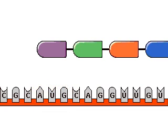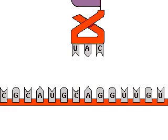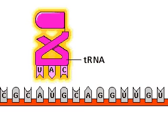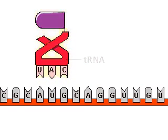In addition to mRNA, several other components are crucial for protein synthesis. Twisted strands of RNA, called transfer RNA or tRNA, match amino acids to their corresponding bases on the mRNA.